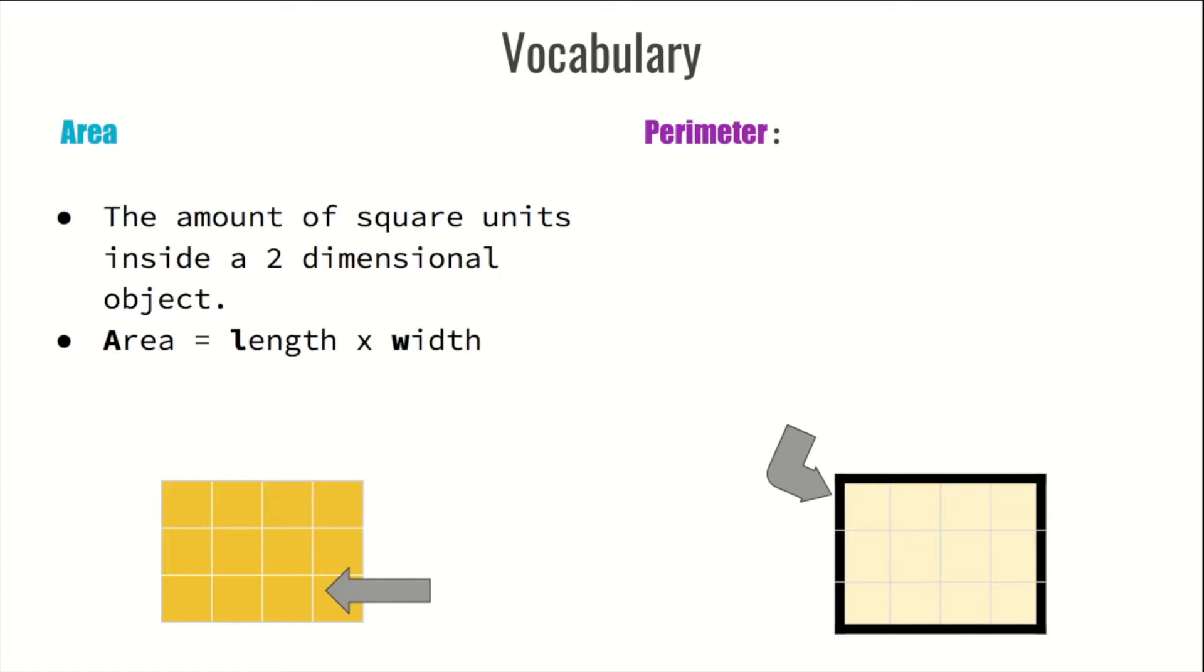length times width. Again, area equals length times width. You want to write that as a formula? That's just A equals L times W. Each letter stands for the word that we just talked about.